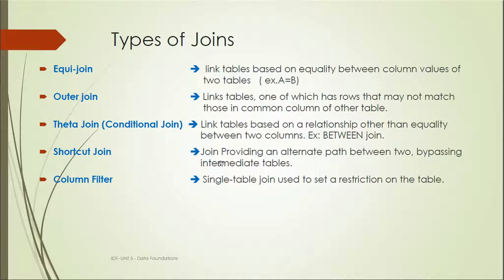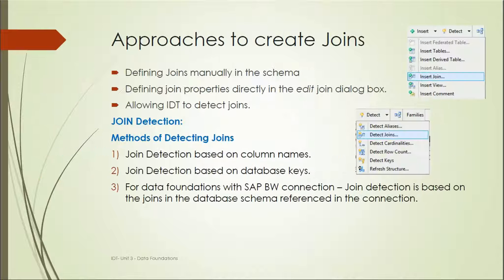A column filter is a self join based on a single table. For example, on a sales table, we can say sales type equals 'S', meaning only data related to sales will be returned.